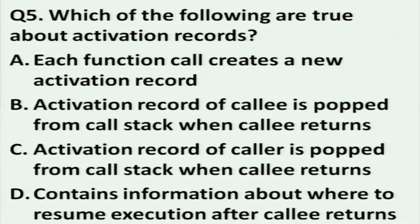Which of the following are true about activation records? Each function call creates a new activation record. Activation record of callee is popped from the call stack when callee returns. Activation record of caller is popped from the call stack when callee returns. And an activation record contains information about where to resume execution after callee returns.